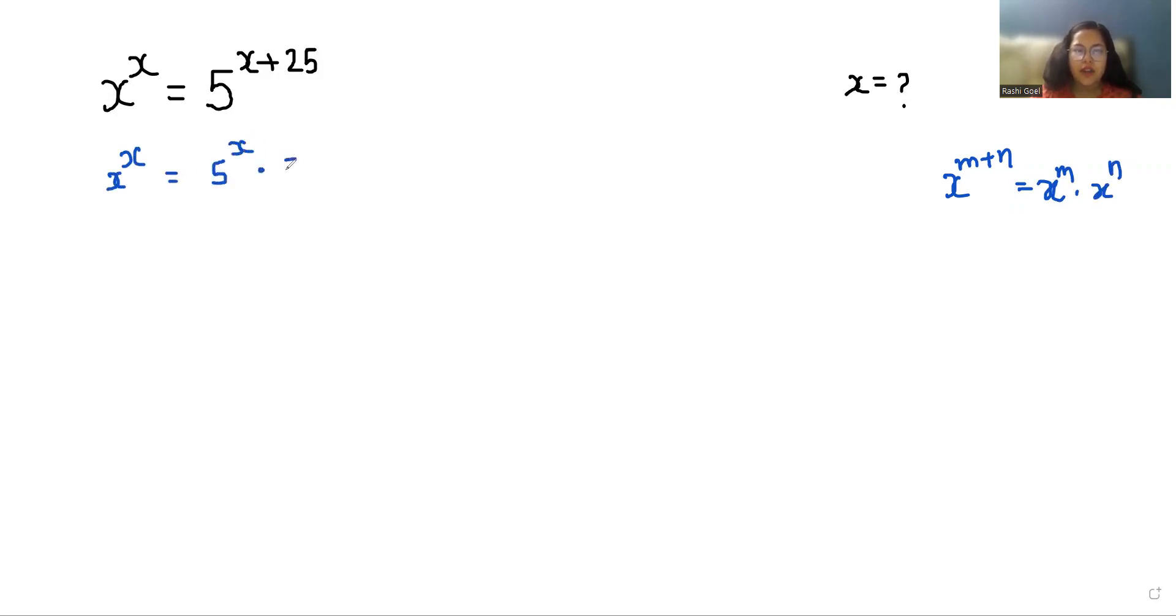Now x power x by 5 power x is equals to 5 power 25. So another exponent rule, x power m by y power m, we can write it as x by y whole power m.